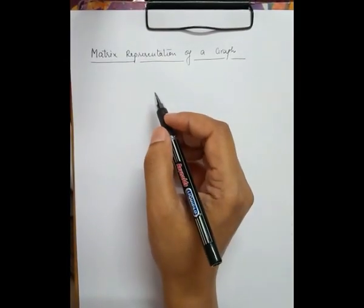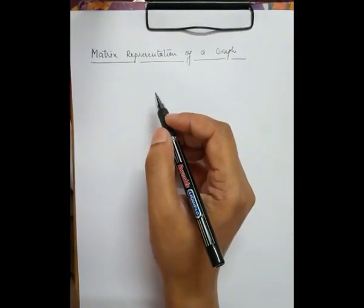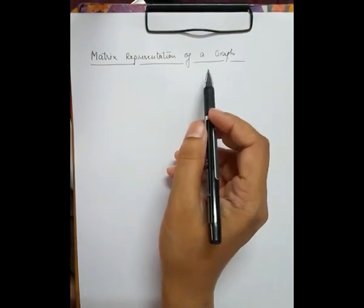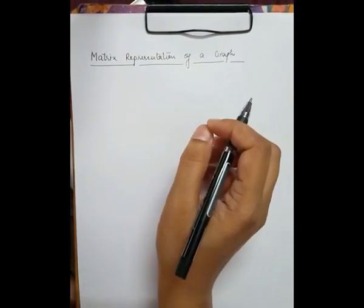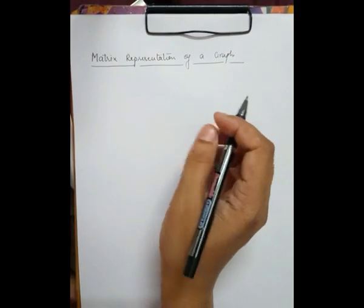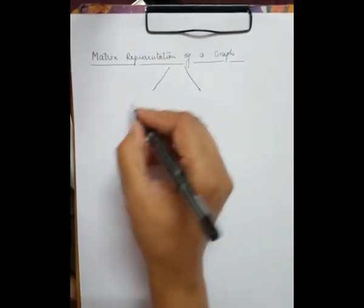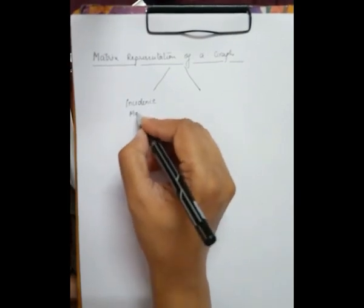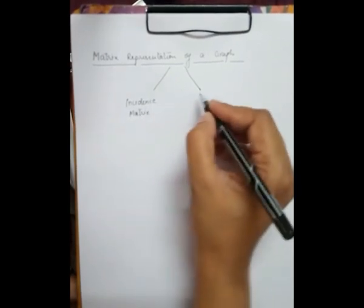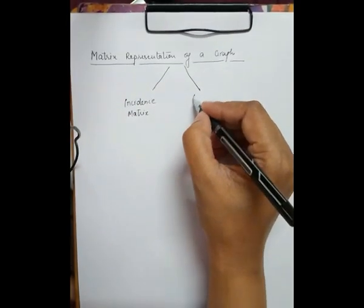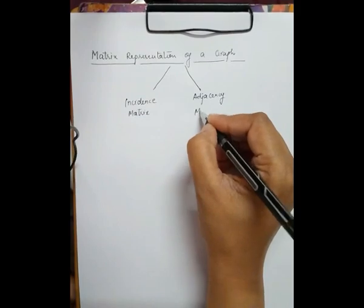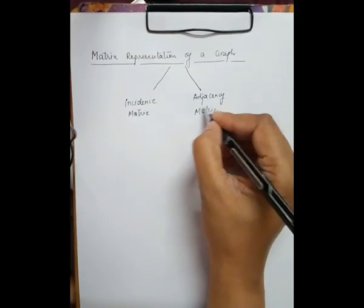Hello friends, today we are going to discuss the matrix representation of a graph. For presenting the graph in computational format, we use a matrix. Two important and frequently used matrix representations of a graph are: one is called the incidence matrix and the other is called the adjacency matrix. In this video we are going to discuss about the incidence matrix.